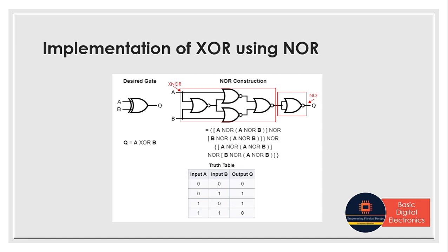Next we will see how to implement XOR gate using NOR gate. We know an XOR gate can be constructed if we have an XNOR followed by a NOT. We just saw that we need four NOR gates to make an XNOR gate, and followed by a NOT — which is a NOR with joined inputs — gives us XOR gate. So totally we need five NOR gates to construct an XOR gate.